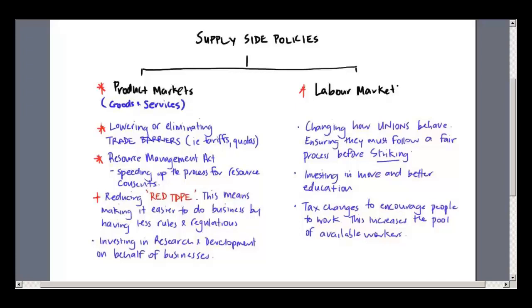Thirdly, there's this thing called red tape, which is just a fancy way of saying rules and regulations. When businesses make decisions, or even before they start out, they have to go through a routine of rules and regulations. The government is trying to make fewer of those rules and regulations. Ultimately, that reduces cost, improves profit, and improves the aggregate supply curve.